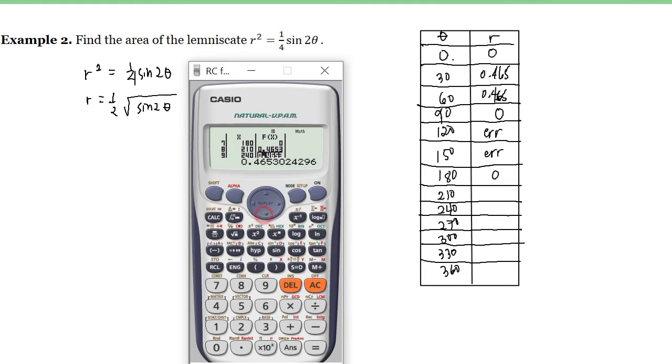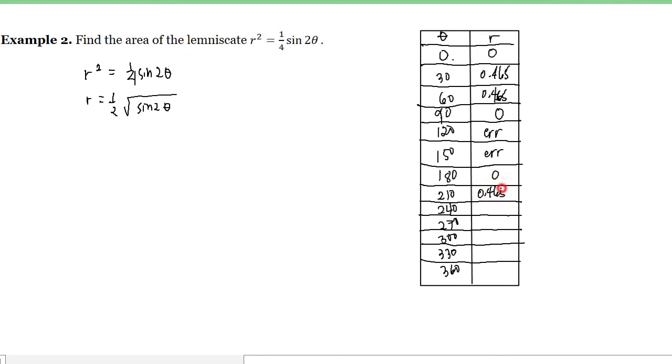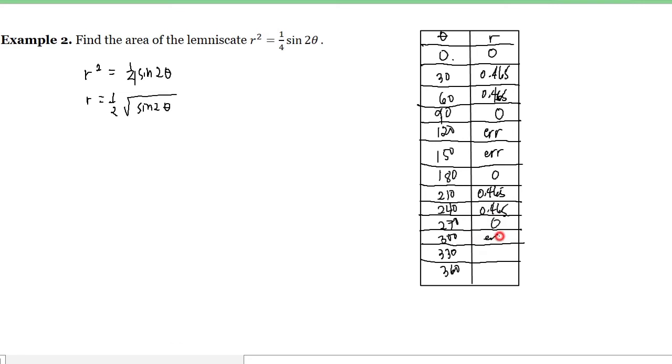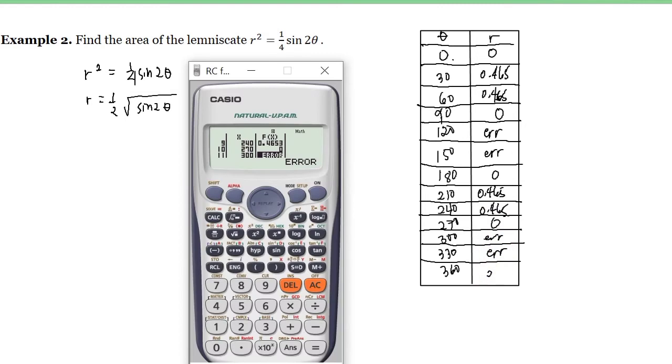And we have here 0.465 also. And then 0.465 here. And for the 270, we have 0. Then error, error. And for the 360, we have 0.